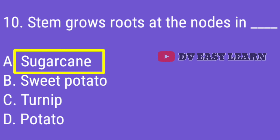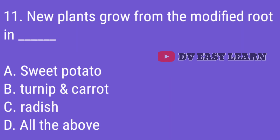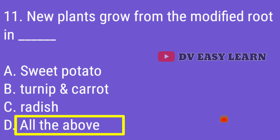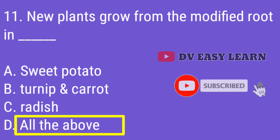Correct answer: Sugarcane — new plants grow from nodes. Question 11. New plants grow from the modified root in? Correct answer: All of the above — Sweet Potato, Turnip, Carrot, and Radish.